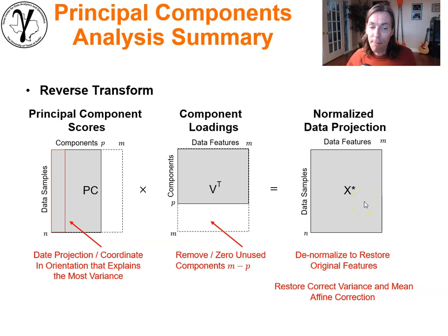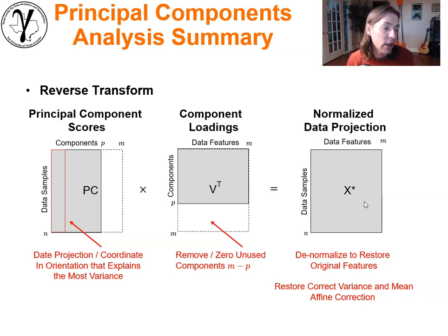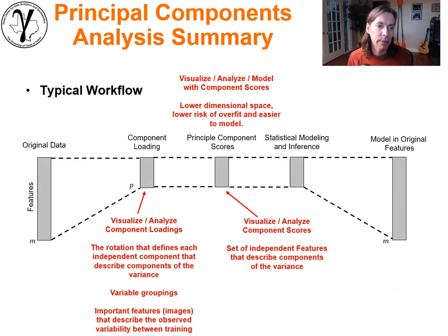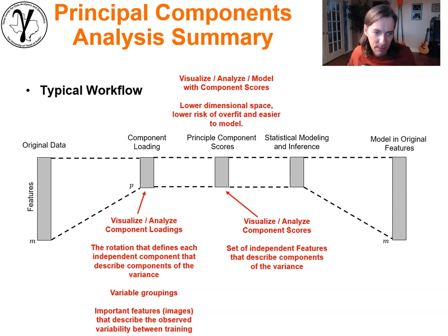This is an estimate because we projected to a lower dimensional space and lost some variance. We can reverse the standardization to get back to original feature space and work with those features where the physics makes sense.